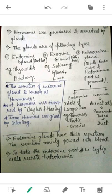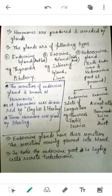What do we mean by a duct? Let us take the example of the salivary gland, which is an exocrine gland with a duct. Ducts are tube-like structures connecting the gland to the targeted area. The gland secretes a particular substance and pours it directly to the targeted area with the help of this tube-like structure, which is known as a duct.